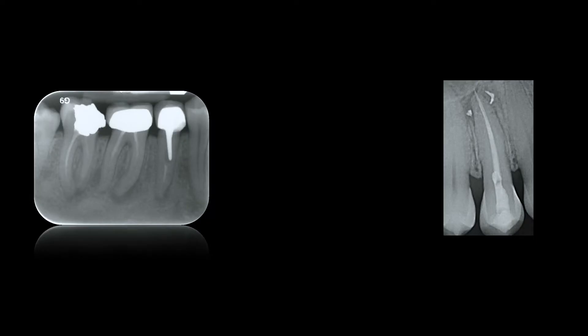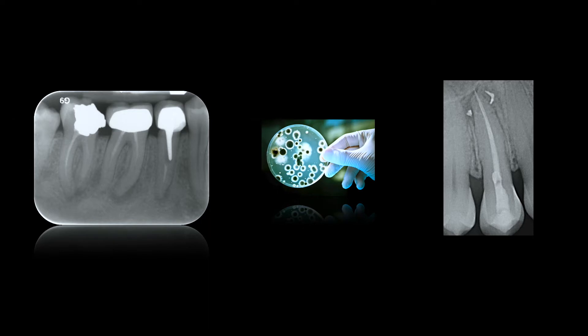Looking at this X-ray, we can understand that from one side — the right side — we are successful, and instead from the left side we have a failure. The difference between the two cases is represented by bacteria. We fight against bacteria. Bacteria represents our major problem during root canal treatment. Normally the success rate of root canal therapy is conventionally between 70 and 95%. The presence of persistent infection is the main reason for the failure of endodontic treatment.